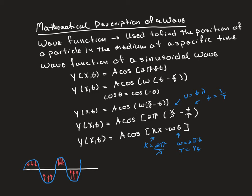Velocity equals position over time, so we can rearrange to say that time equals position over velocity. As this particle is going down, the next particle is just a little bit behind it. So the motion in x is the same as some earlier x, because particles oscillate — some earlier particle would have had the same y-position as some particle in the past.